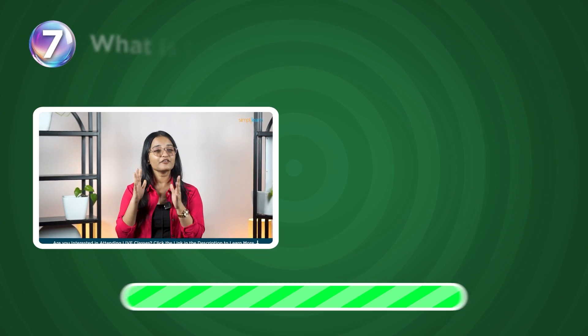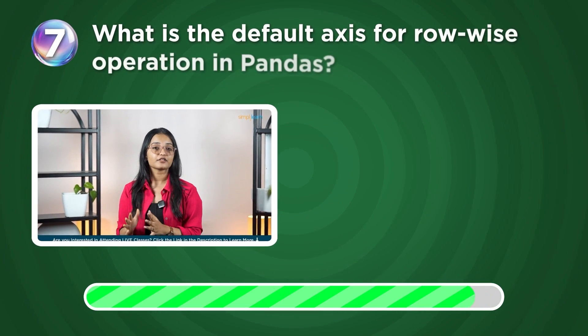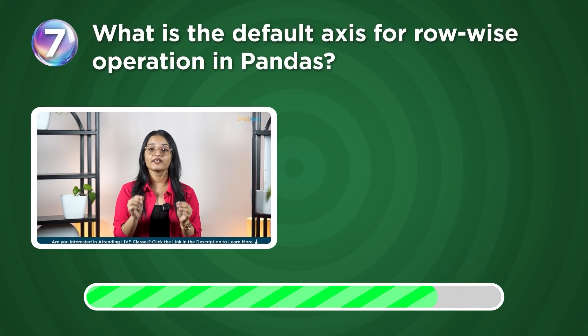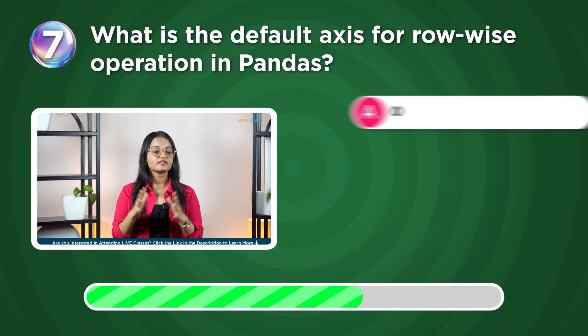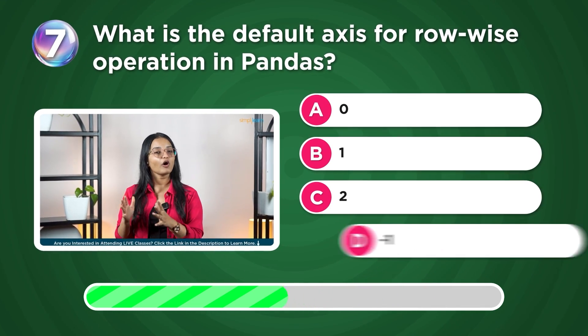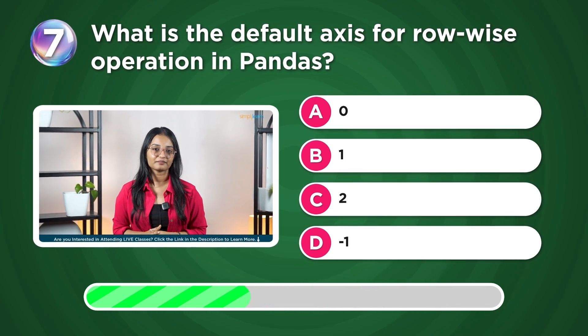What is the default axis for row-wise operation in pandas? 0, 1, 2, or minus 1?